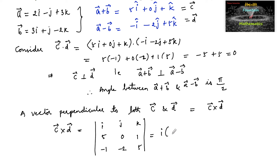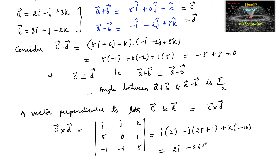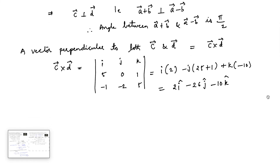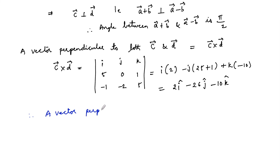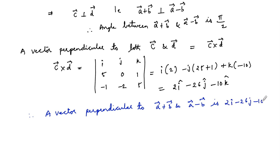Evaluating the determinant: i times (0 plus 2), minus j times (25 plus 1), plus k times (minus 10), which equals 2i minus 26j minus 10k. Therefore, the required vector perpendicular to both vector a plus b and vector a minus b is 2i minus 26j minus 10k.